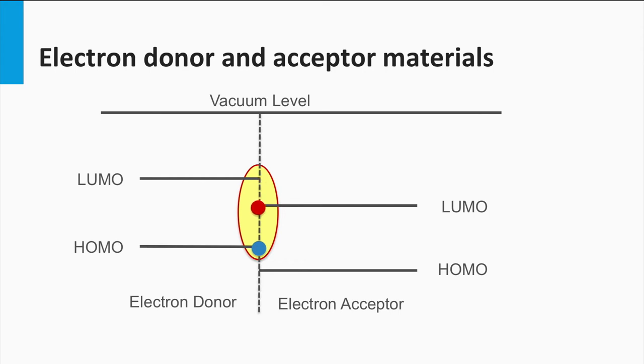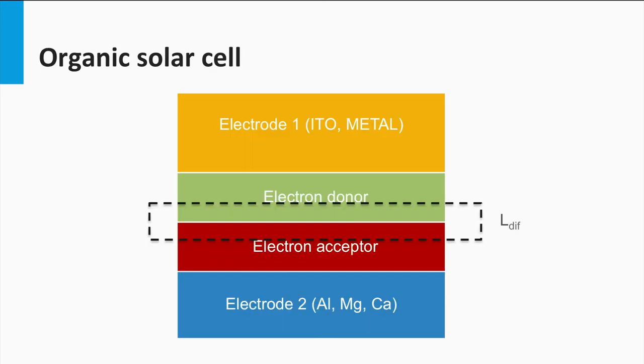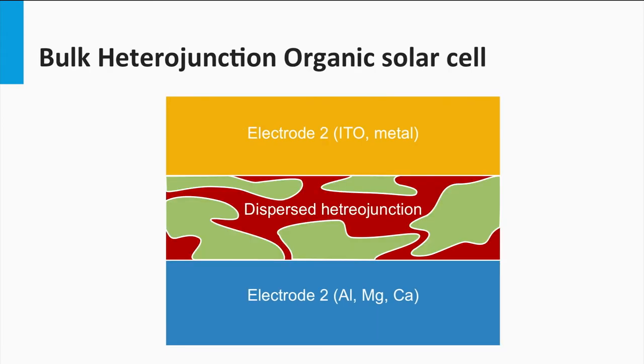An electron is injected in the electron acceptor and a hole remains in the electron donor material. A problem of this device concept is that the diffusion length of the exciton is only 10 nm. It means that in this simple configuration the thickness of the solar cell is limited by the diffusion length, while the thickness has to be at least 100 nm to absorb enough light. Therefore, the organic solar cells are based on bulk heterojunction photovoltaic devices.